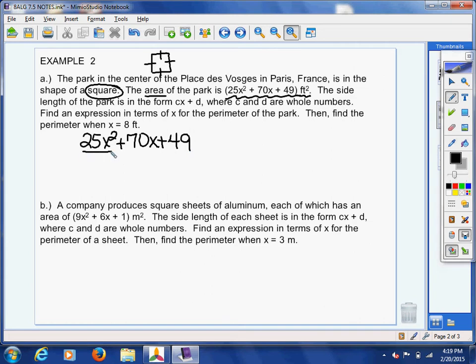25 and x squared are both perfect. 49 is perfect, and 49 is positive. So, it's looking really good. So, we think it's going to be some quantity squared, and we have to figure out what that something is.